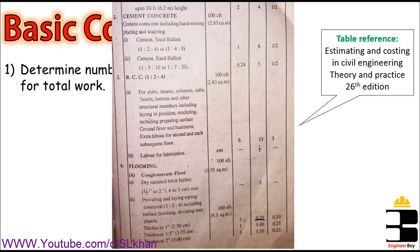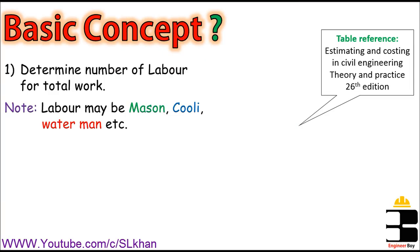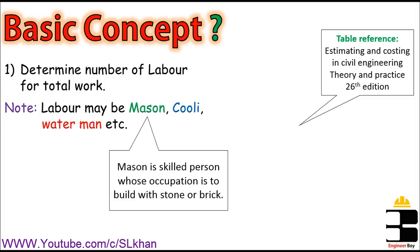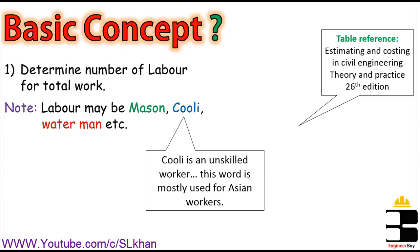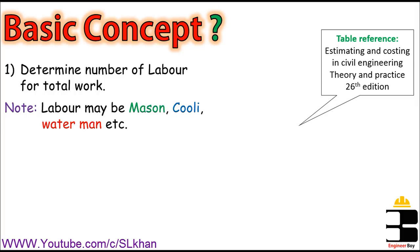The labor may be a mason, coolie, or waterman. The mason is a skilled person whose job is to build with stone or brick. Mason can do PCC, RCC, etc. The coolie is an unskilled worker — this word is mostly used for Asian countries or Asian workers. And the waterman is just a waterman, also sometimes known as H.T.